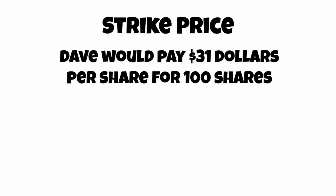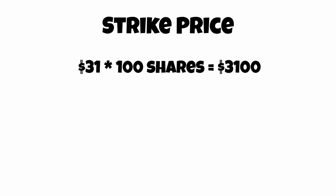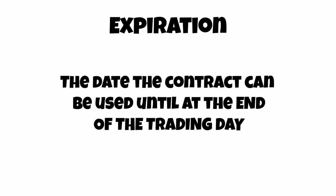An example of this would be if Dave wanted to buy — he would buy 100 shares at $31 if AT&T is trading above $31, for a total of $3,100, because $31 is the strike price. The expiration is the date that the contract must be used by at the end of the trading day, and if it isn't, this option expires and can no longer be used.